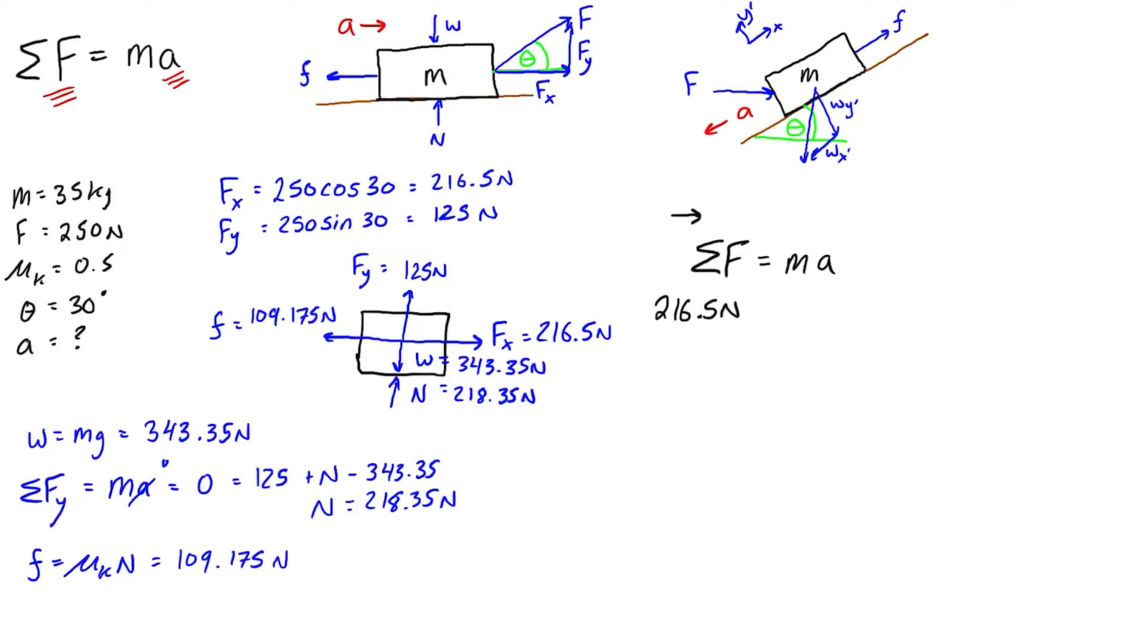216.5 newtons. We're going to subtract the friction force. Let's even write it with the variables first, so we just have fx minus friction force is equal to ma. So fx is 216.5 newtons minus the friction, because it's going in the opposite direction of acceleration, it is 109.175 newtons, times the mass which was 35 kilograms times the unknown acceleration.